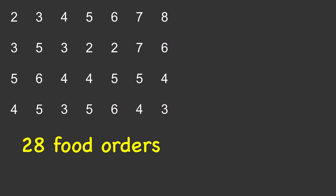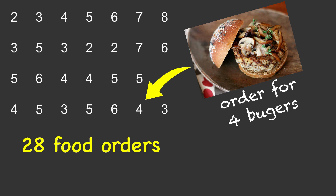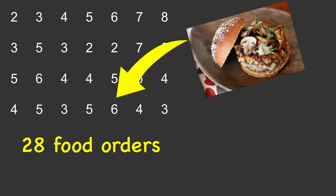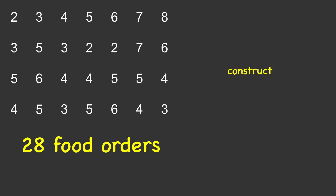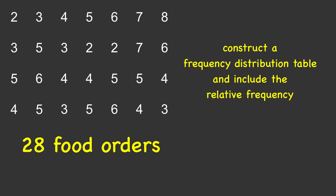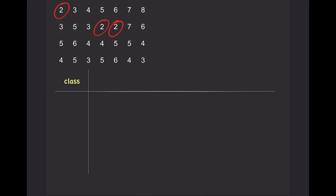28 orders were made, and the number of burgers sold per order are listed here. This order sold 4 burgers, and this order sold 6 burgers. Notice the lowest number in the data set is 2, and the highest number in the data set is 8. Since the range from the lowest to the highest number is very small, we will use each individual number in the data set as a class.